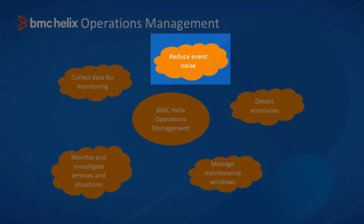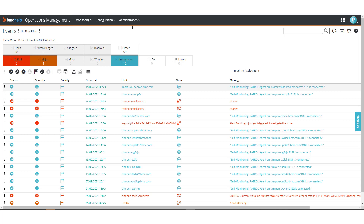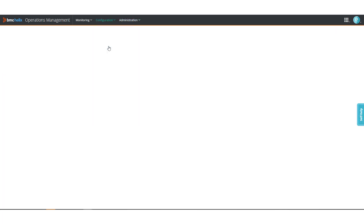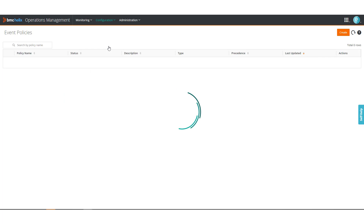After you have data in the system, you can reduce the incoming event noise. Use event policies to get to the relevant or critical events by suppressing unwanted events.